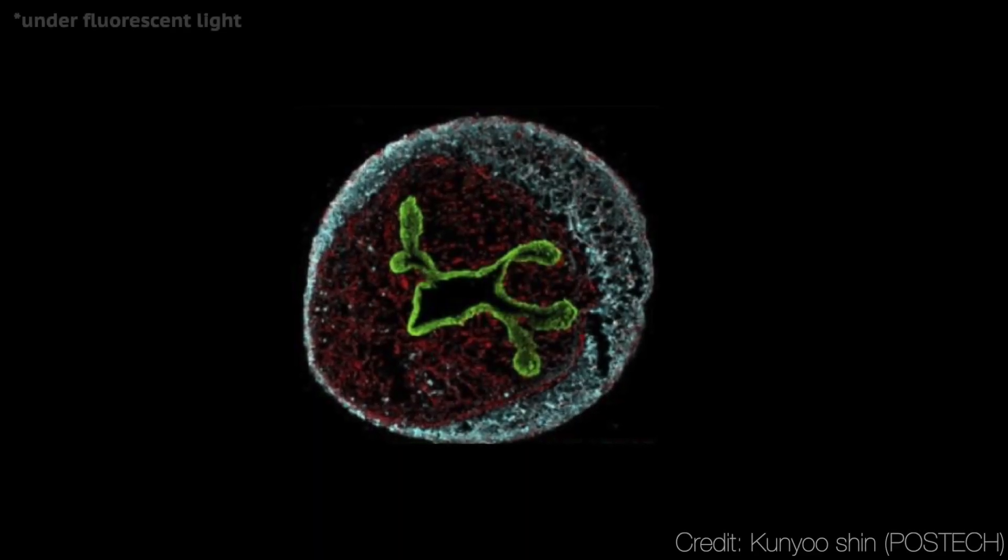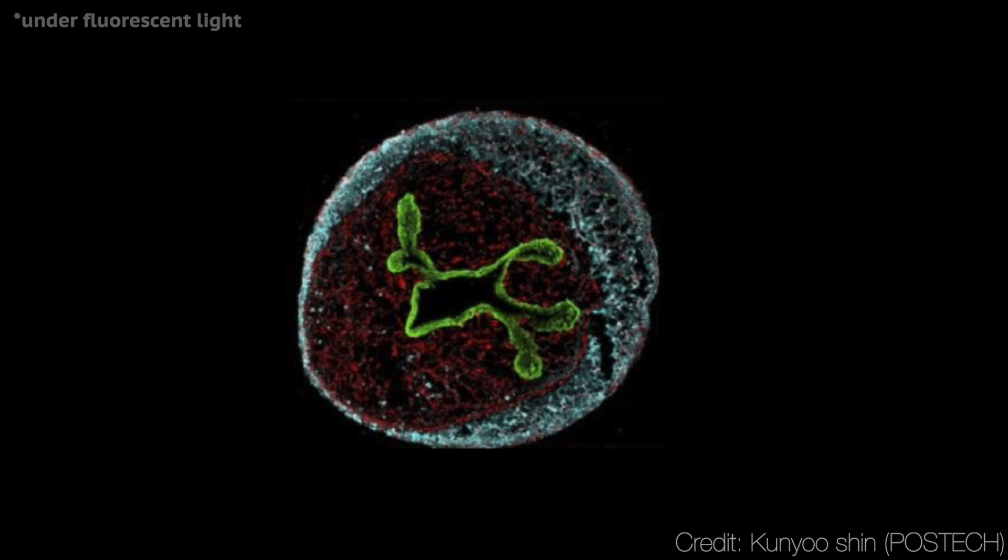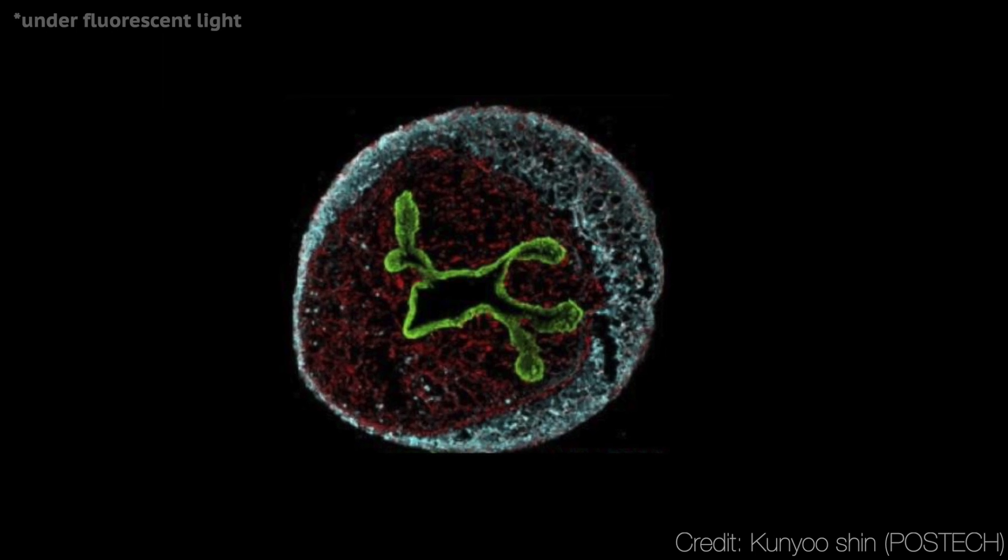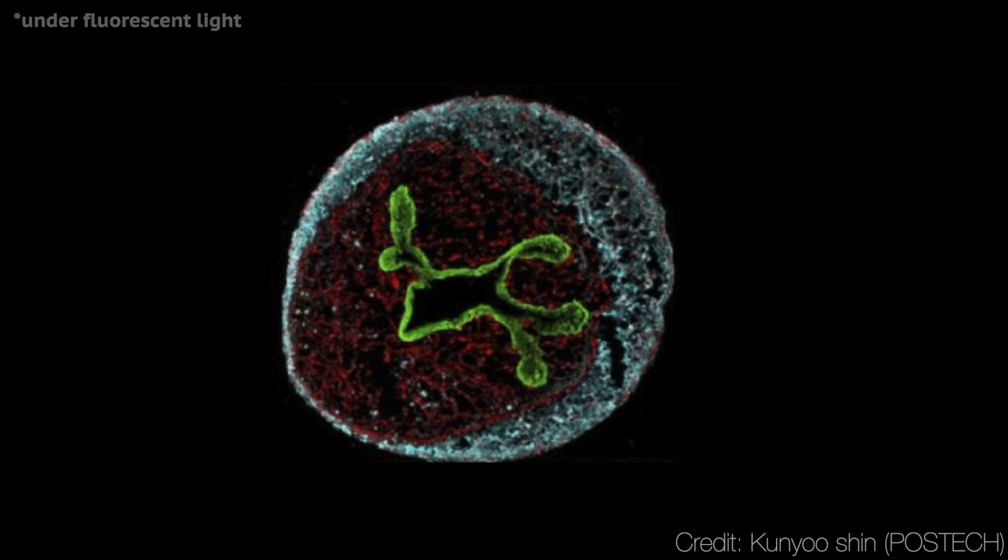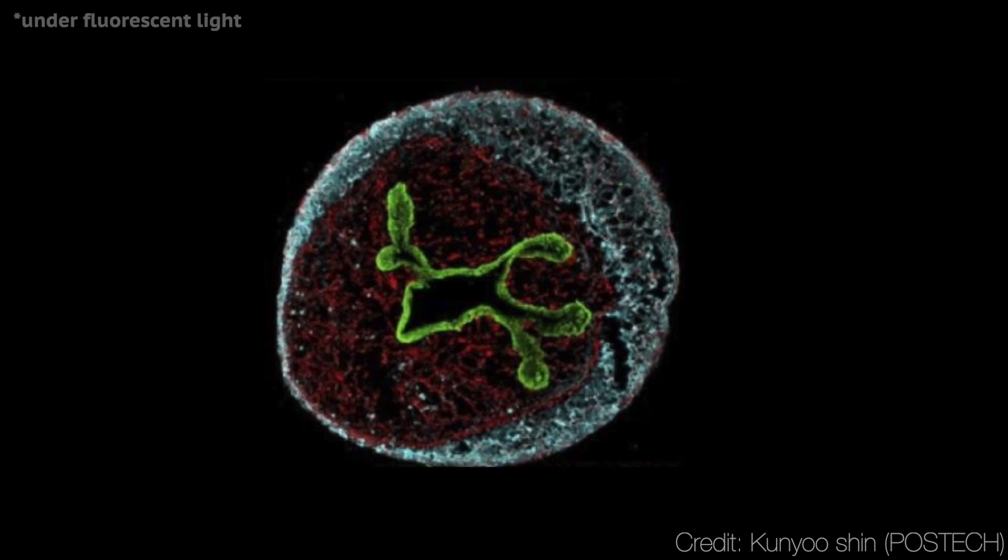This is an organoid. It's a bundle of cells in a petri dish. But they've grown into a structure. One that mimics certain aspects of a human organ. And they look a little bit like organs too.